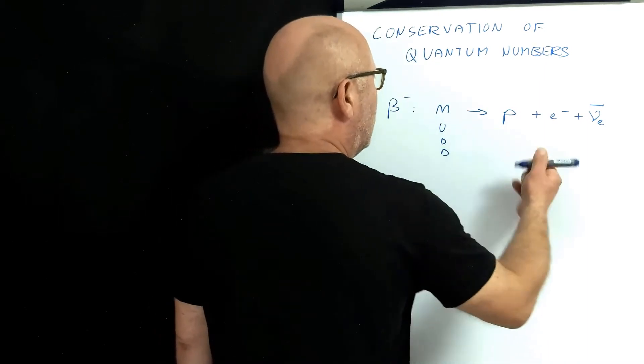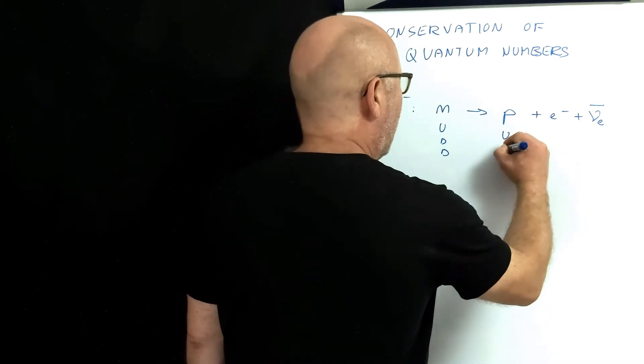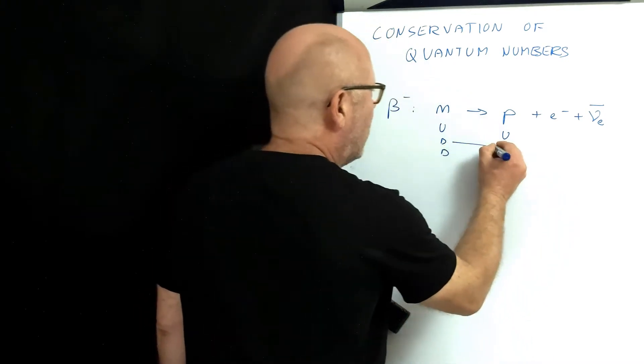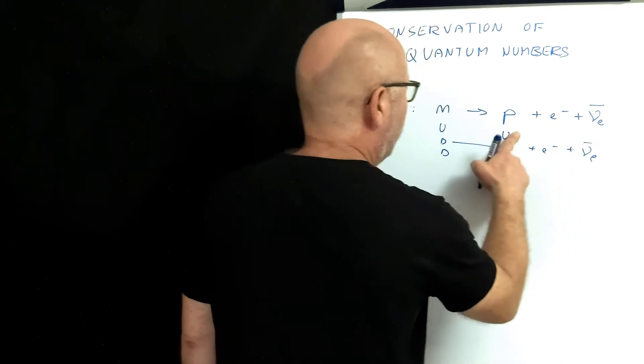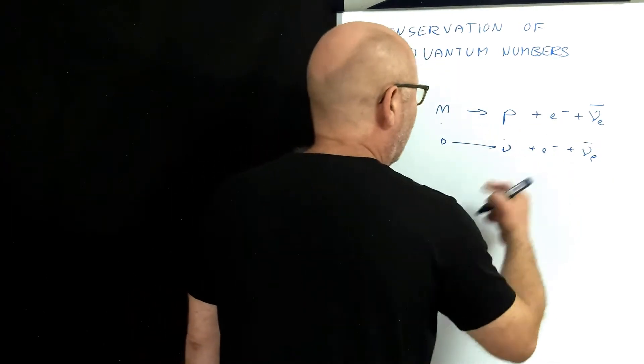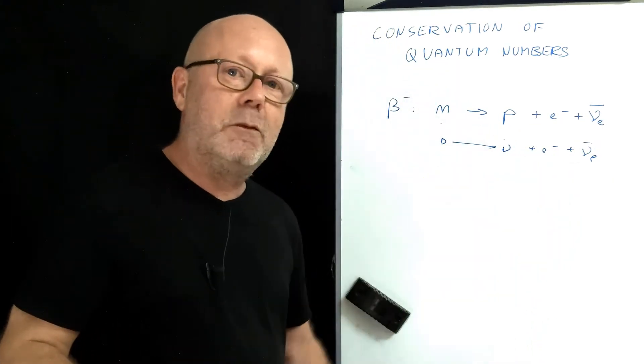So actually, this is a down becoming an up, plus an electron, plus an anti-neutrino of the electron. Let me remove these. Now, to check if this is possible, I suggest to my students to just write down the quantum numbers.